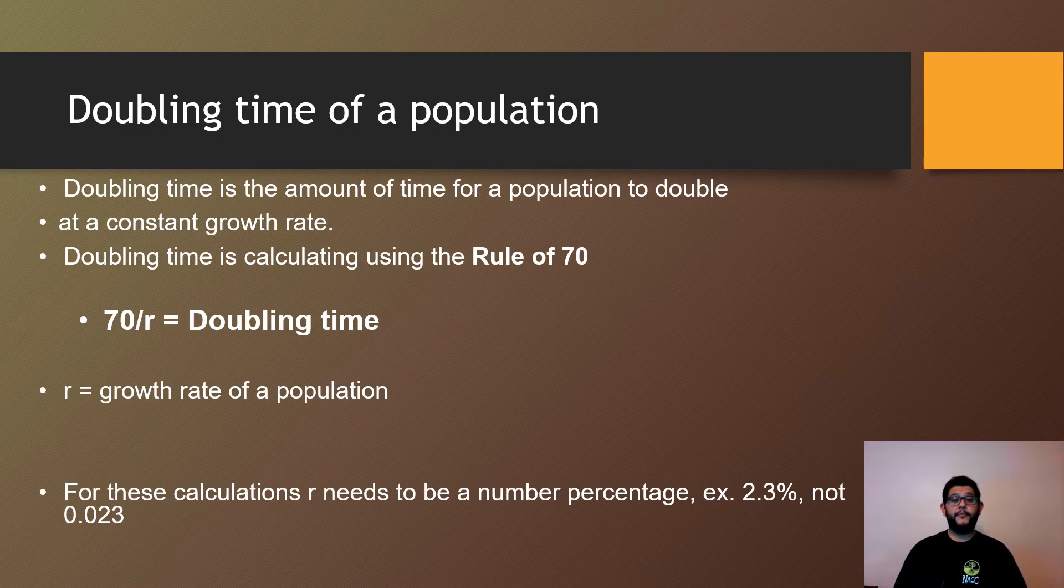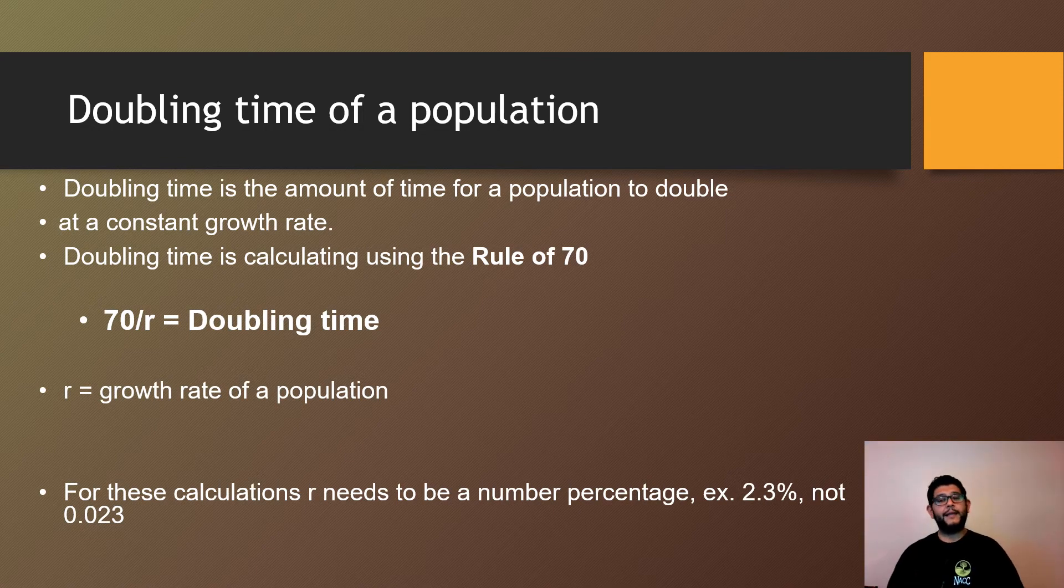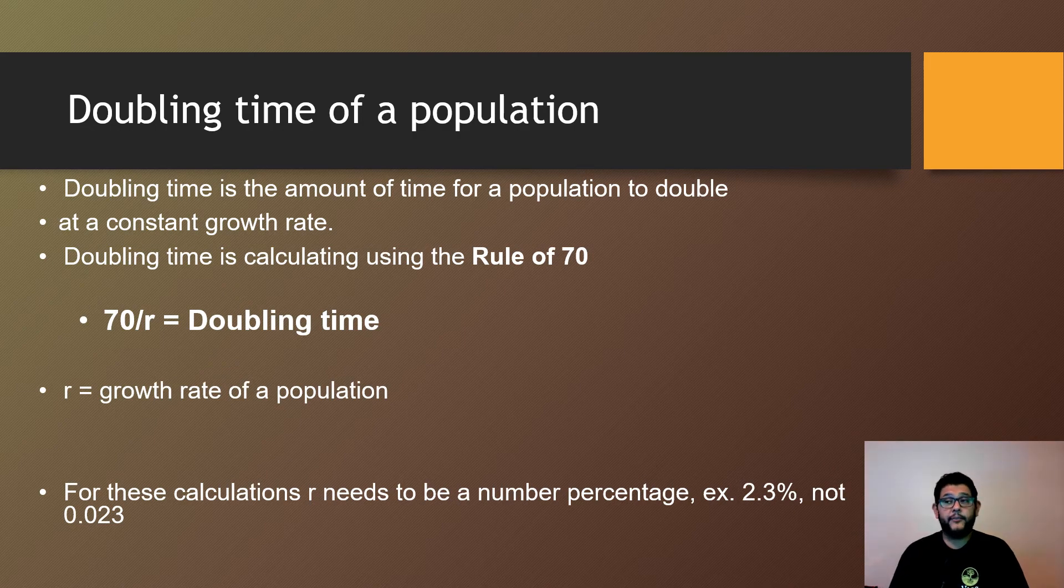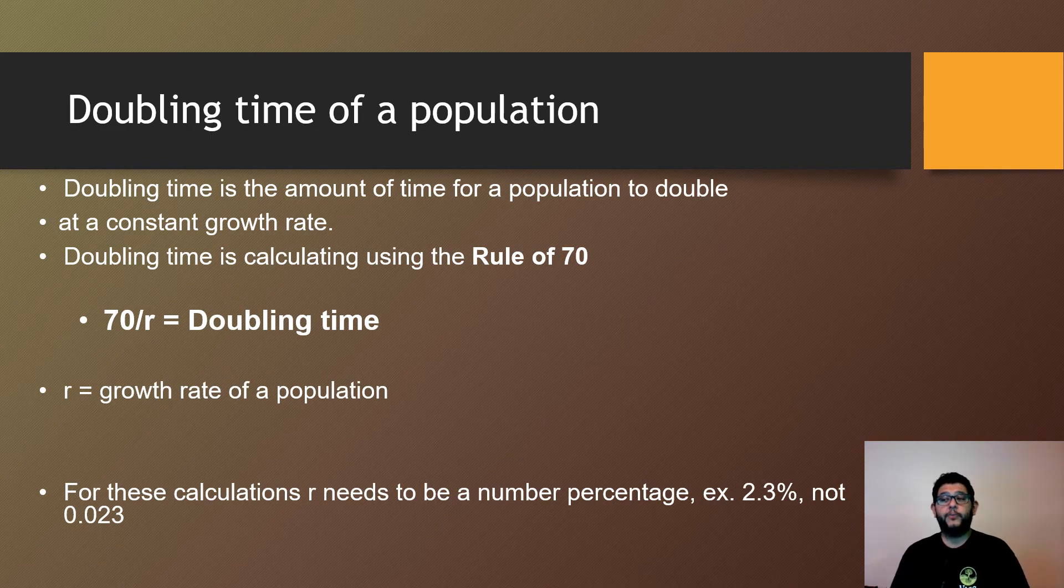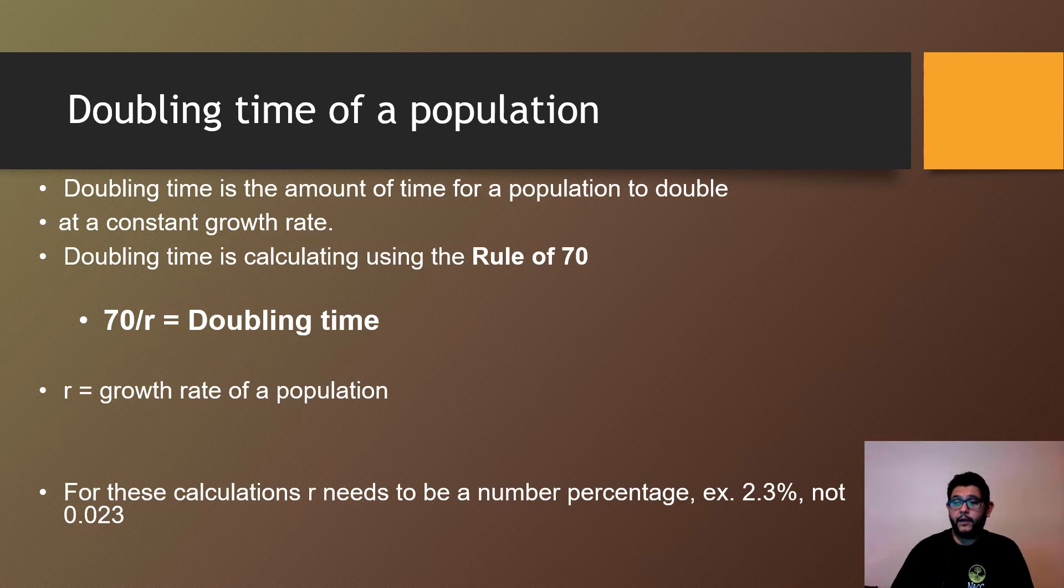And of course, you have the doubling time of population. It's going to be a problem you're going to see likely in some multiple choice questions on the APES exam. They're going to ask you how long is it going to take for a population to double. And there's a calculation that we call the rule of 70. It's basically 70 divided by the growth rate of a population. Now, one thing to remember, the calculation here, the r, needs to be in the number percentage.